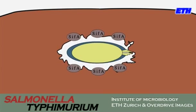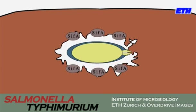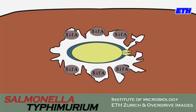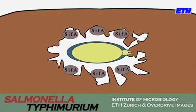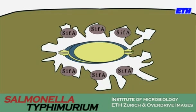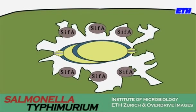Thin filaments start to extend from the vacuole, covered with Salmonella effectors such as CYP-A. Now the bacterium is safe and starts to replicate.